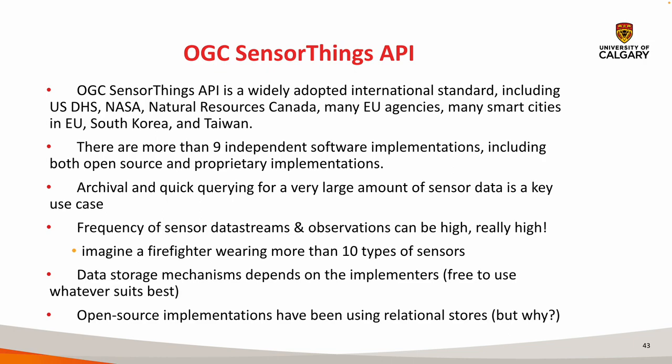SensorThings API provides an open IoT data ecosystem by describing a data format and a really efficient way to retrieve that data by binding the standard with OData and other protocols. It has been tremendously successful — adopted by various agencies and governments, recommended by the European Union as a best practice, and in use by the US Department of Homeland Security.